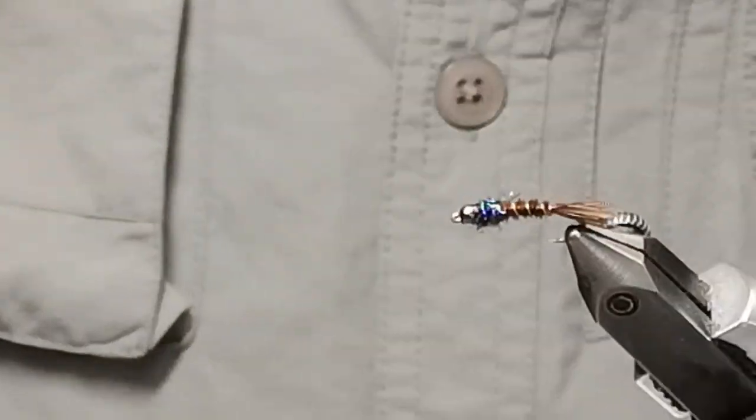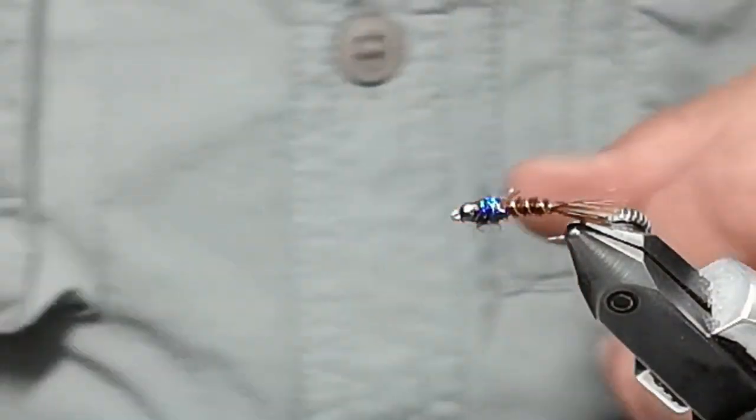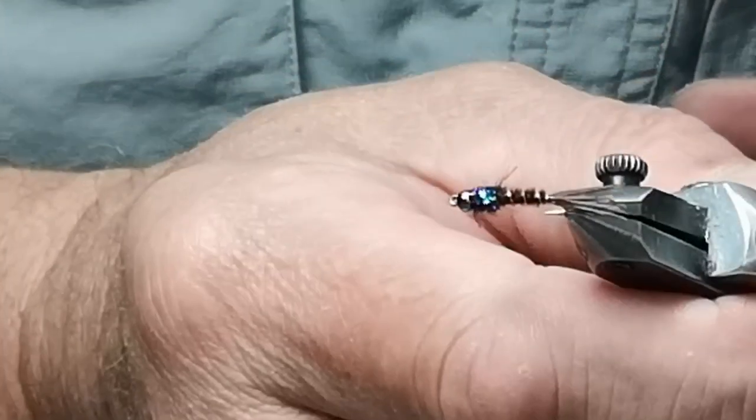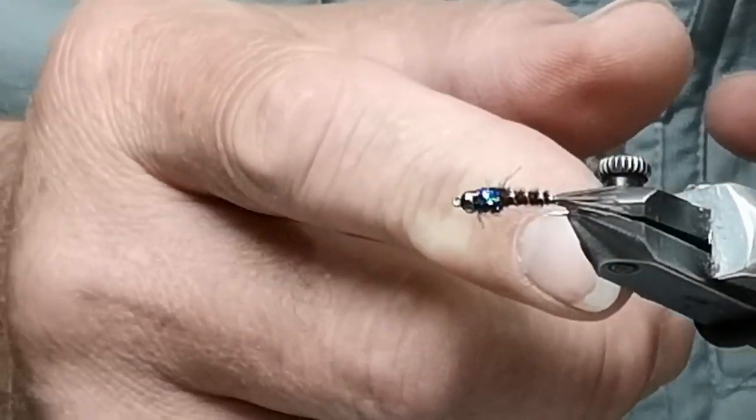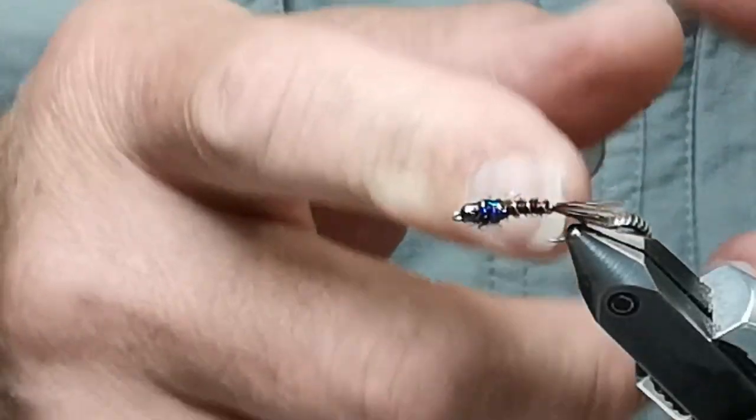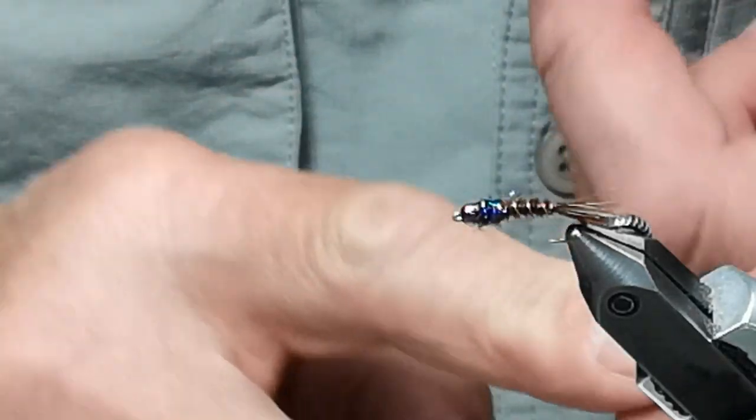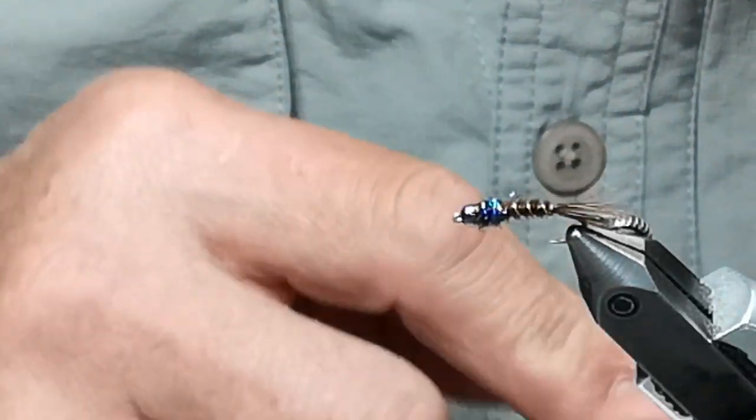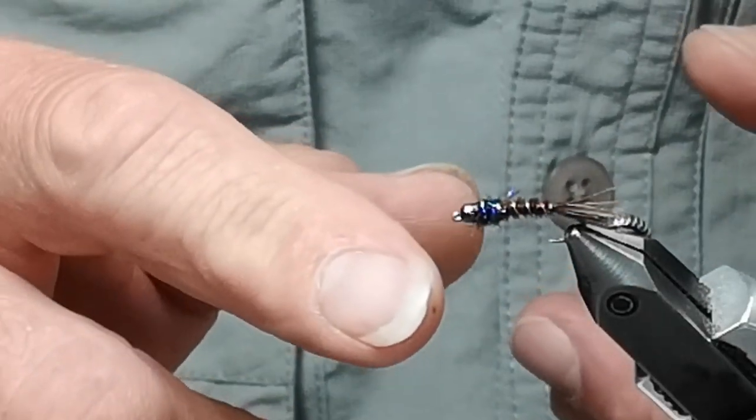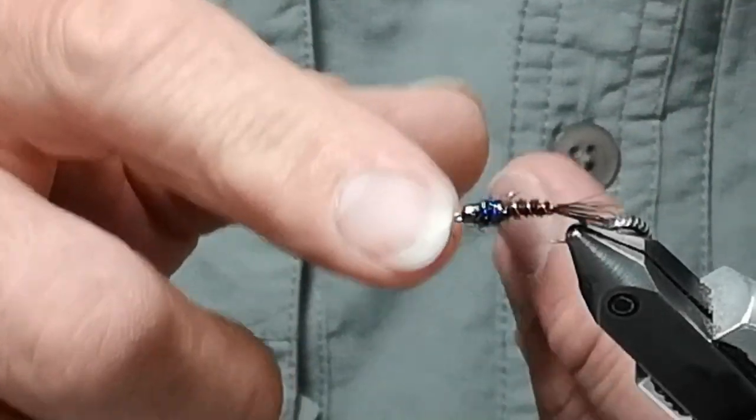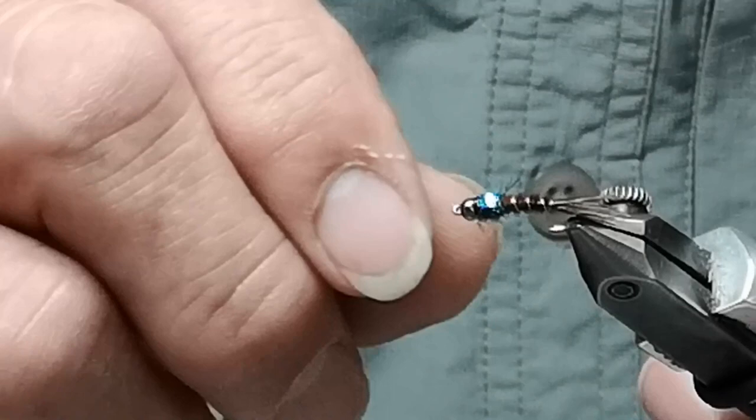You would need 24 of these flies in this color because you need 16s, 14s, 12s, and 10s. Then you go to the gold bead head and you need another 24 of these, so you tie it with the gold bead head in those sizes.